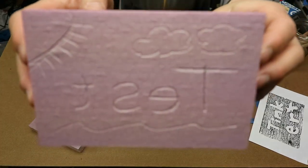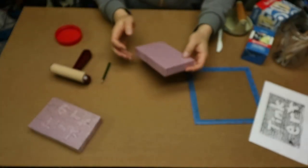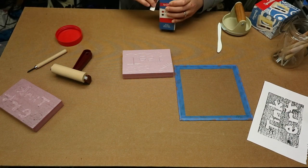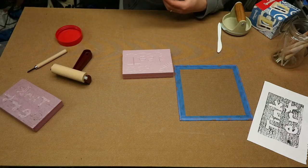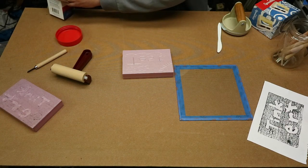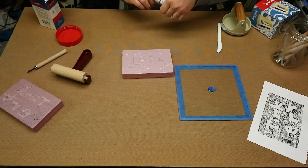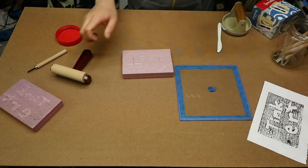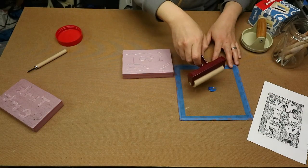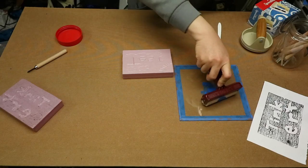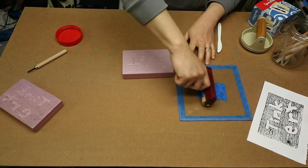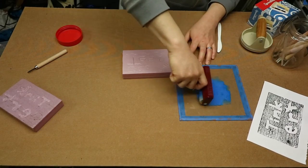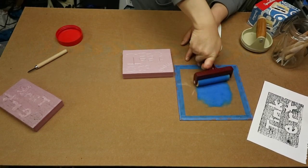So, there is my finished block. Let's get some ink on our plate. And we will pull a nice image. Get a dab of blue. And this is the part that the kids really enjoyed, was rolling out the ink and actually pulling the print from their block.